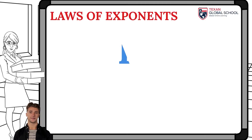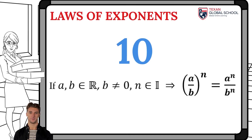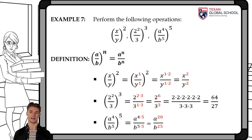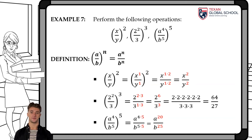This law of exponents indicates that the quotient of two different bases raised to the nth power is equivalent to raising each base with the same exponent n. In the first operation, the quotient x over y squared, applying this law, results in x squared over y squared. In the example 2 squared over 3, all cubed, we multiply exponents of each base, giving 2 to the sixth power over 3 cubed, which develops to 64 over 27.